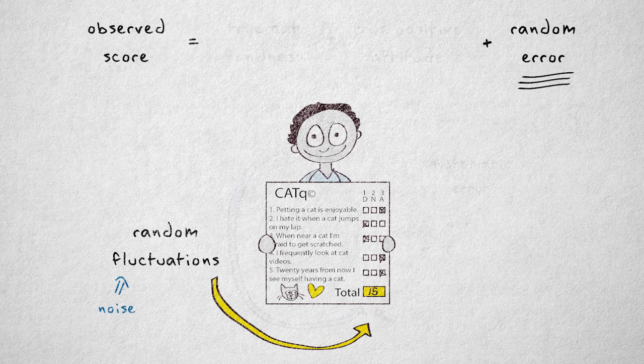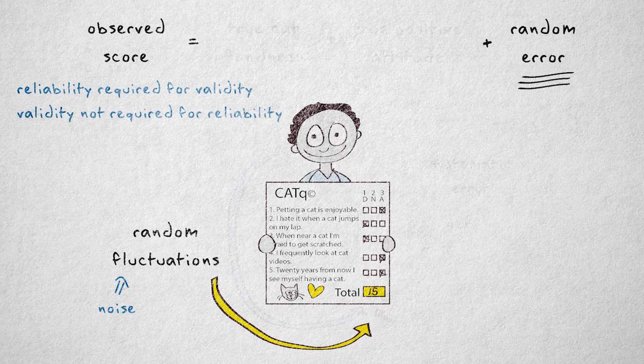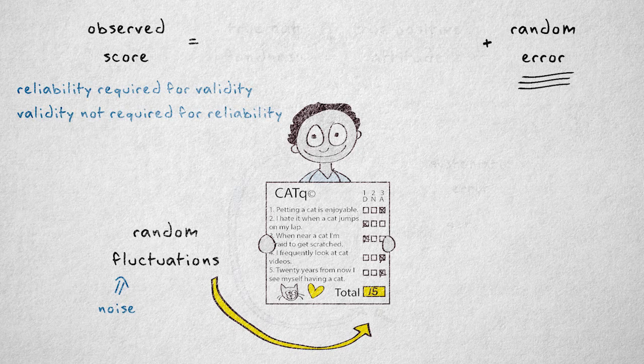Put another way, this means that at least some reliability is required before an instrument can be valid. The reverse does not hold. A perfectly reliable instrument can be entirely invalid. This happens when it perfectly measures a different construct than it was supposed to measure.